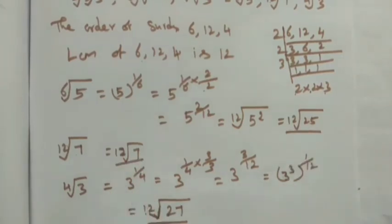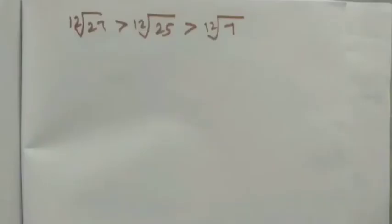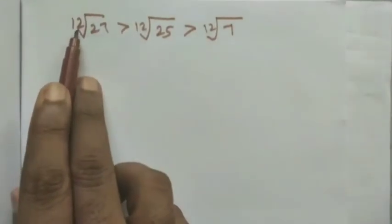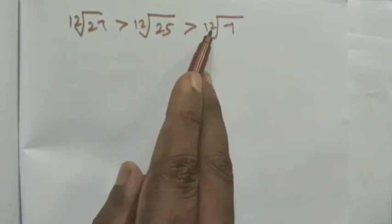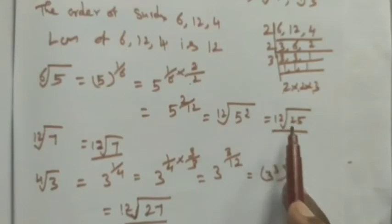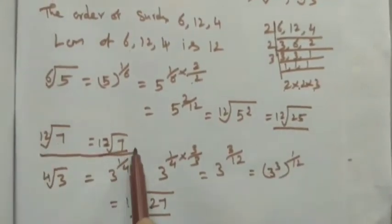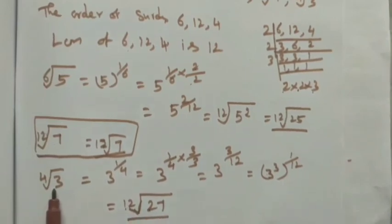Now we arrange in descending order. We have 12th root of 25, 12th root of 7, and 12th root of 27. The descending order is: 12th root of 27 > 12th root of 25 > 12th root of 7. Note that 12th root of 27 corresponds back to 4th root of 3, and 12th root of 27 is also written as 4th root of 3, which is square root of square root of 3.